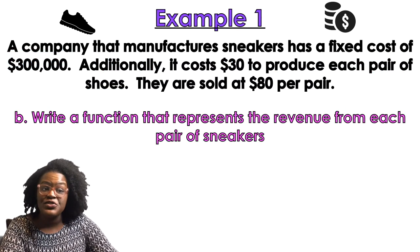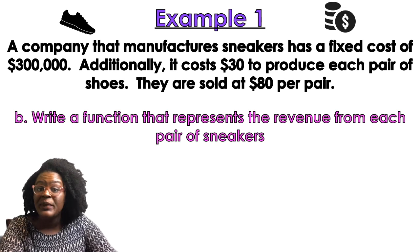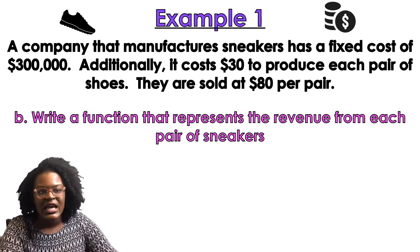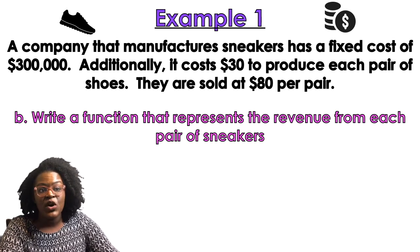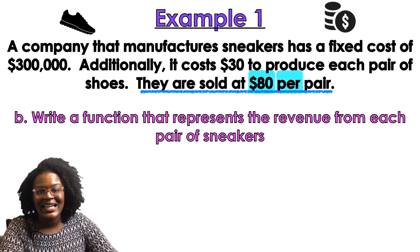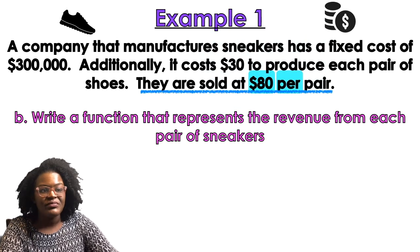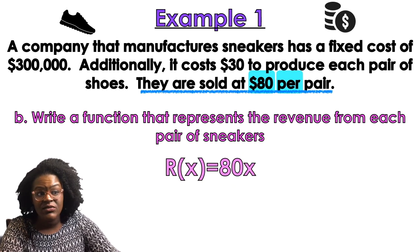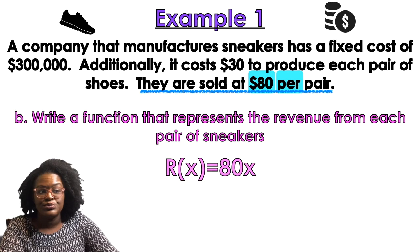Now Part B: write a function that represents the revenue. Revenue means how much money you're making. It tells me that the sneakers are sold at $80 per pair — 'per' means to multiply, so that's 80x. It didn't say a fixed cost, so there's no constant. The revenue function is R(x) = 80x.